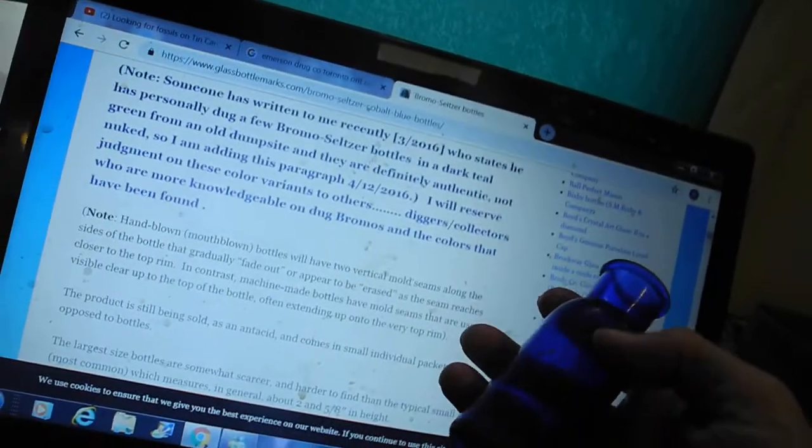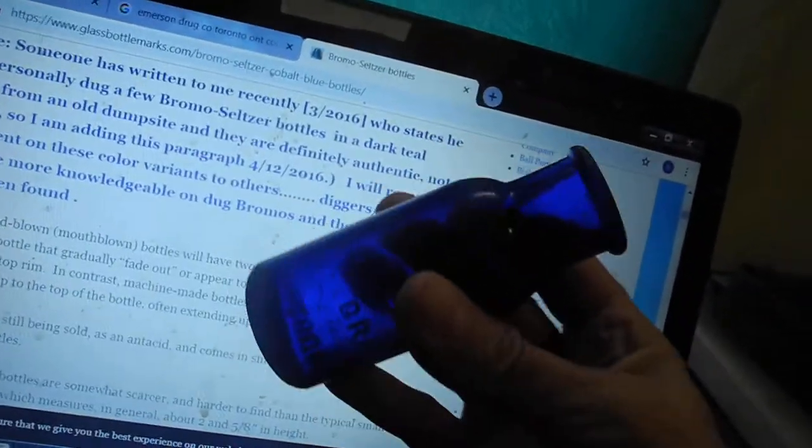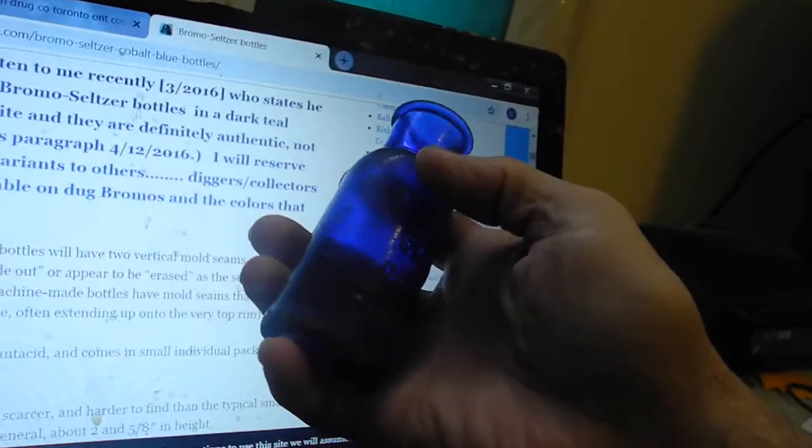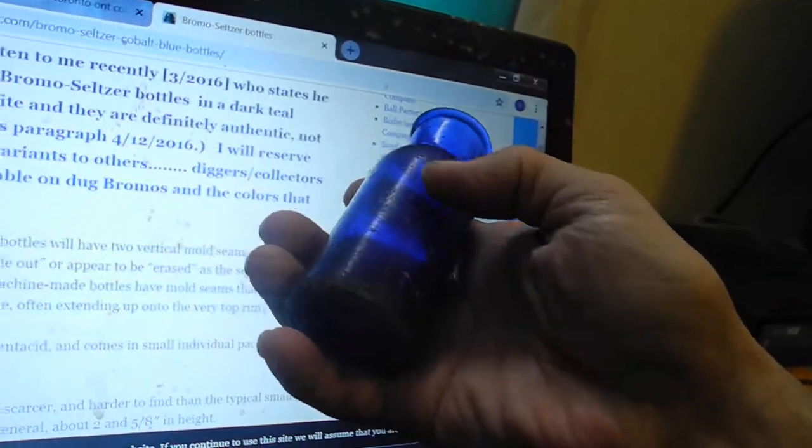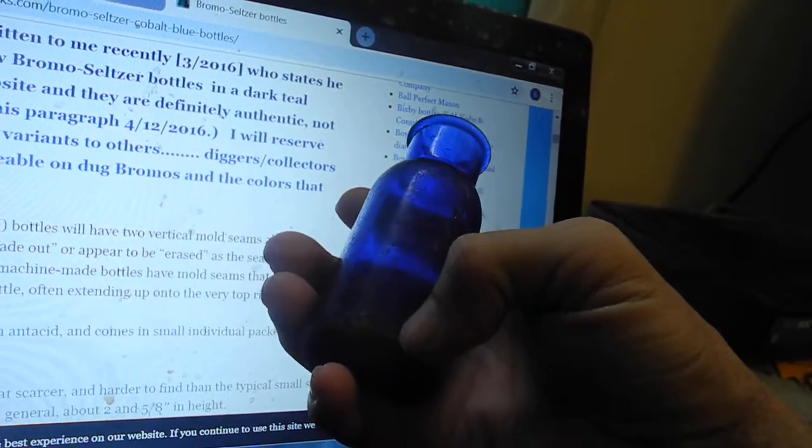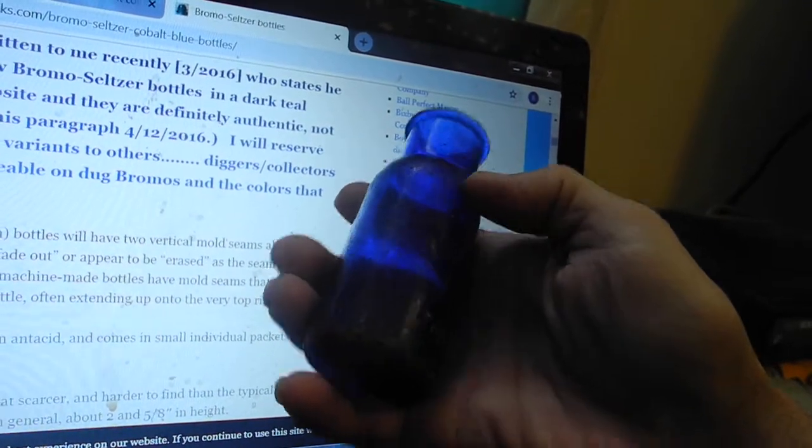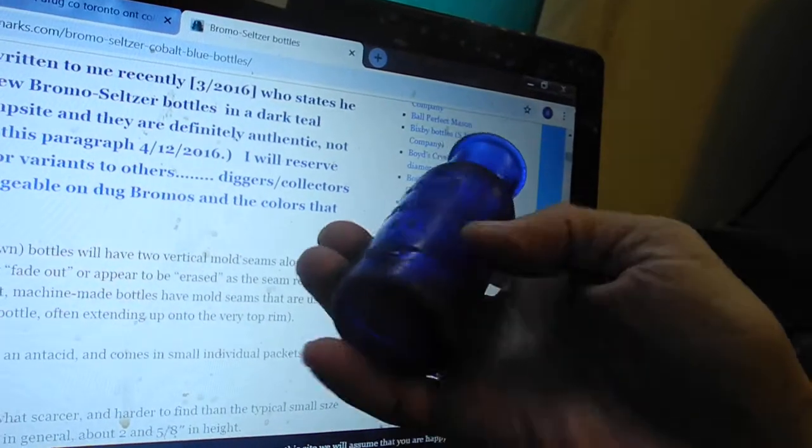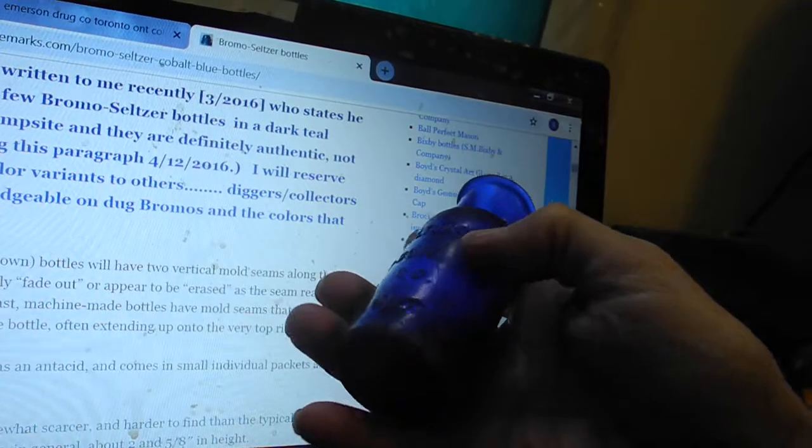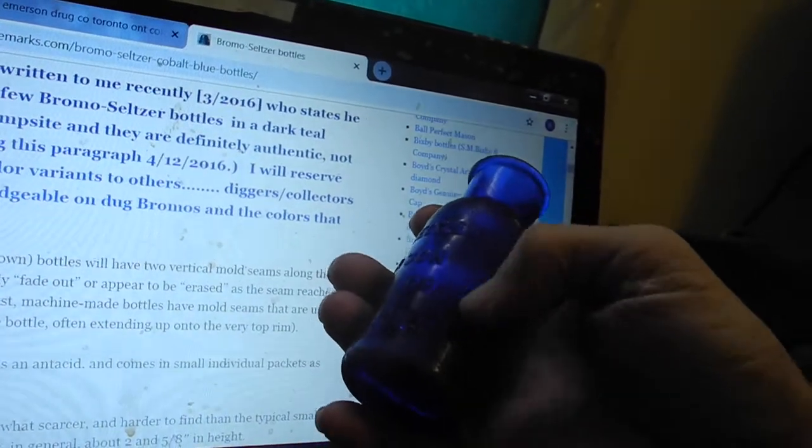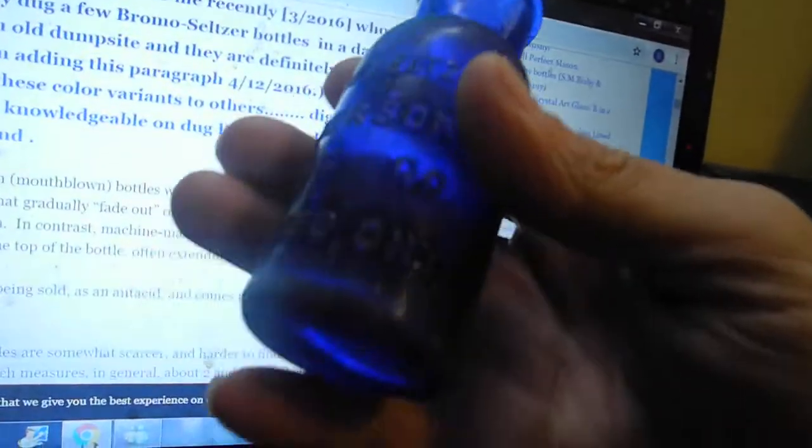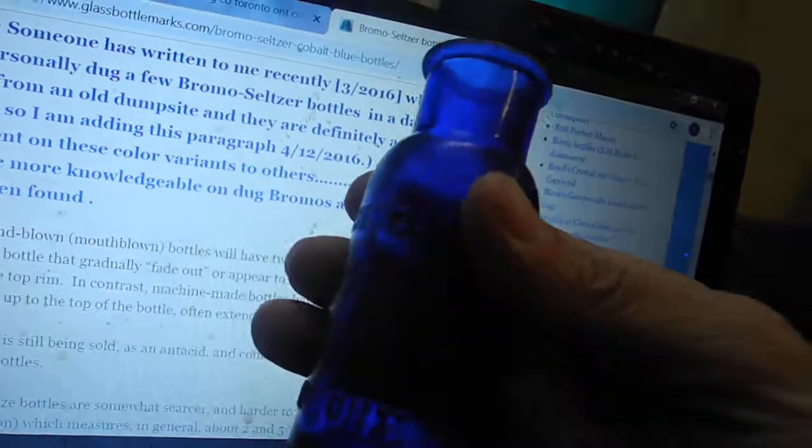I don't know if you can make this out. There's a rim. Not a rim, sorry, the seam runs up there. On the other side, there is a seam there. So this bottle was produced in 1891, hand blown.